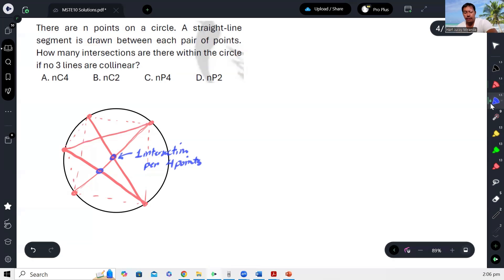Okay, that will intersect also this line. Okay, so ibig sabihin there will be two more na intersections, no? So kapag nagdagdag pa tayo ng isa, pero the question is how do I count all of that, no?